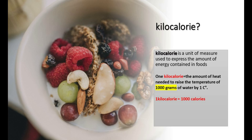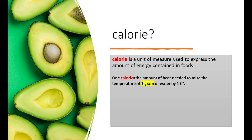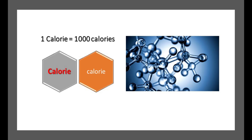1 kilocalorie equals 1,000 calories. What is a calorie then? One calorie is the amount of heat needed to raise the temperature of 1 gram of water by 1 degree Celsius. Therefore, 1 kilocalorie is equal to 1,000 calories.